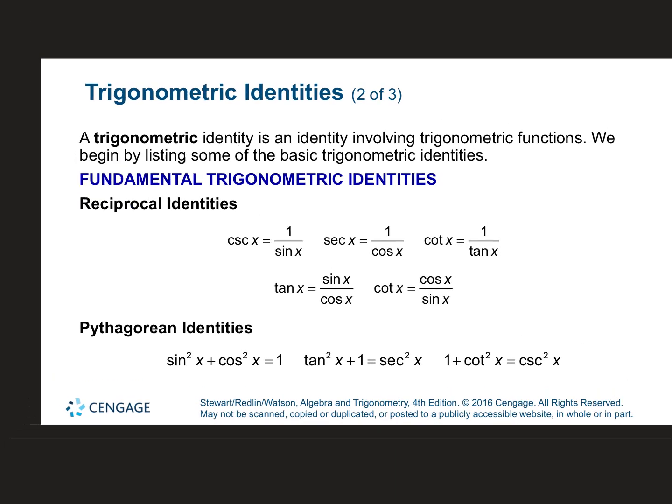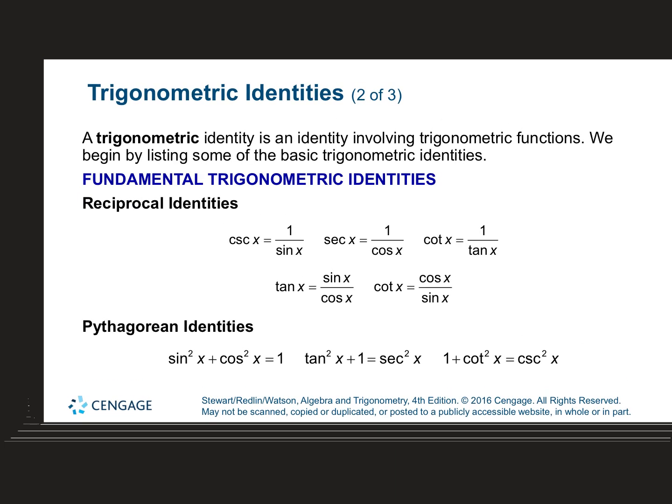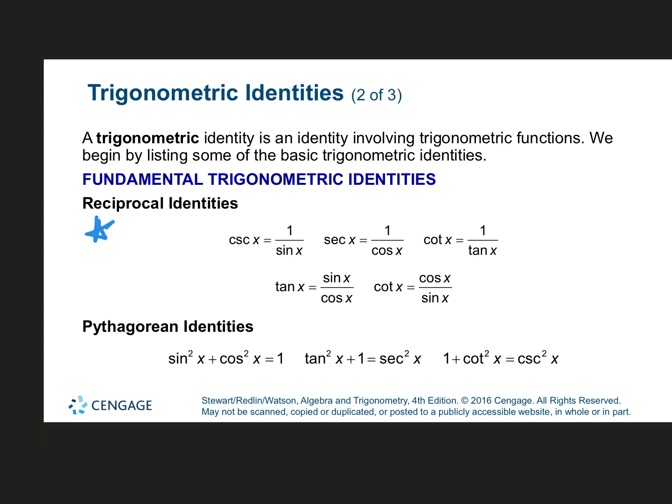These are your identities. We're going to be talking about two types of identities. Co-functions and stuff on the next slide we're not going to do. But your reciprocal identities and your Pythagorean identities are going to be your best friend.